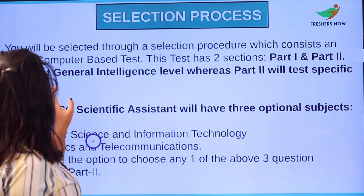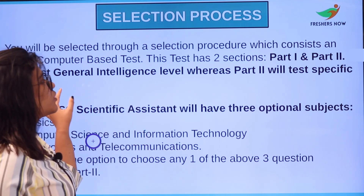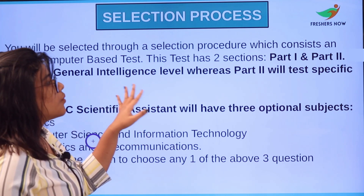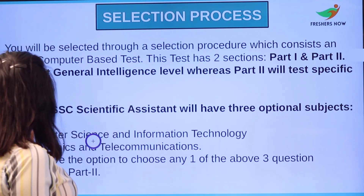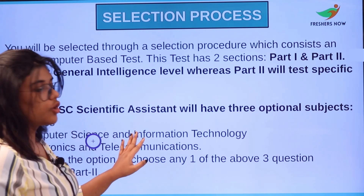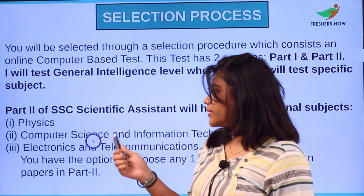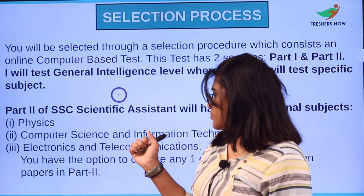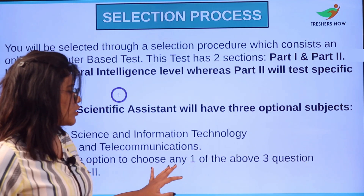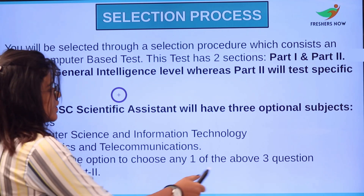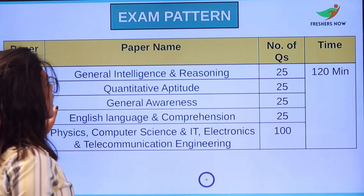For the selection process, you will be selected through a procedure which consists of a computer-based test. This test consists of Part 1 and Part 2. In Part 1 you will be tested under general intelligence, whereas in Part 2 a specific subject will be tested. For SSC Scientific Assistant, you will have three optional subjects in Part 2: Physics, Computer Science and IT, and Electronics and Telecommunications.